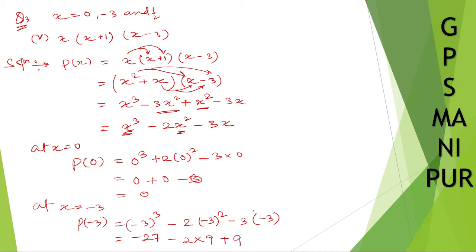Let me solve this: minus 27, minus 18, plus 9. Minus 27 plus 9 will be minus 18. Then minus 18 minus 18, which will be equal to minus 36. I hope the answer is correct.